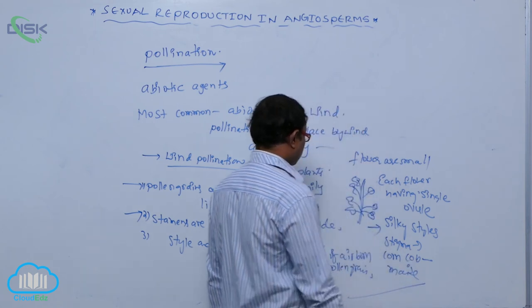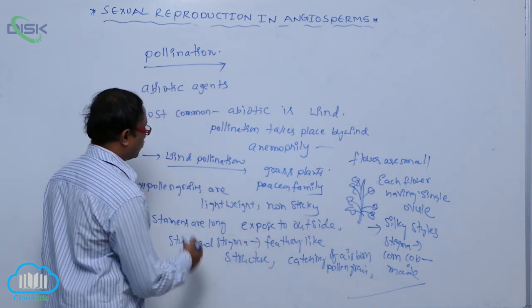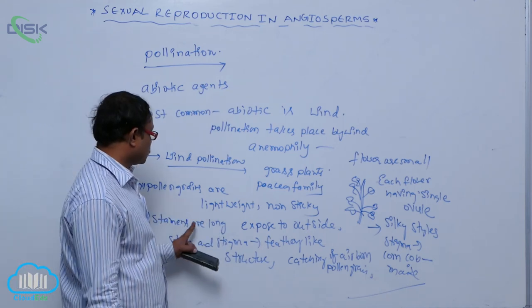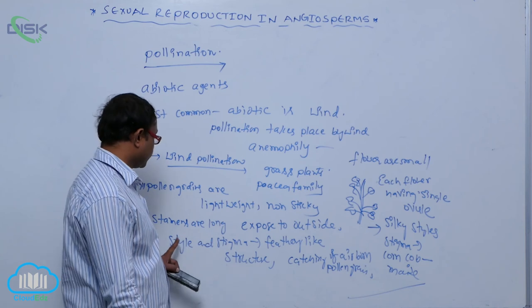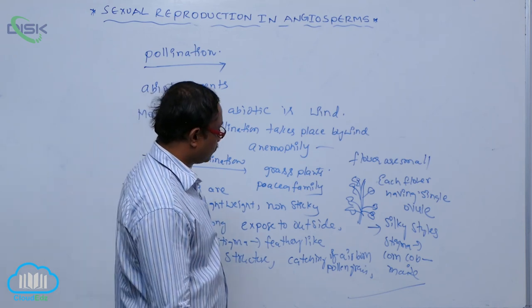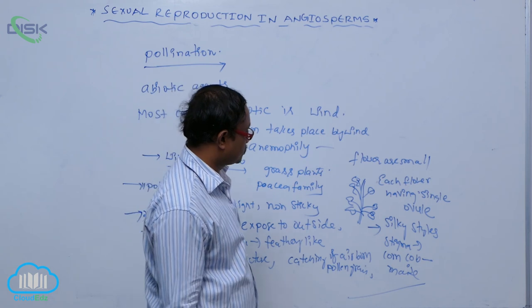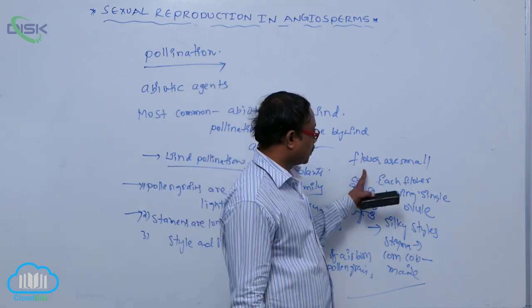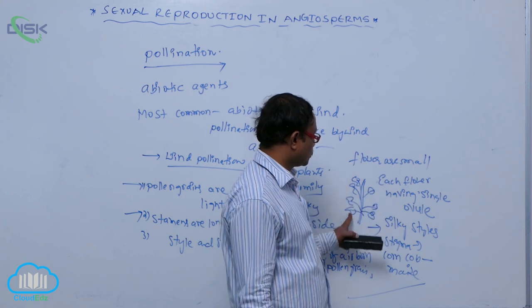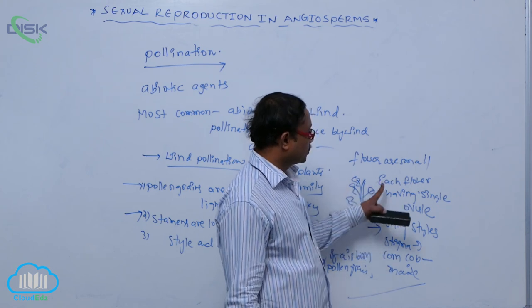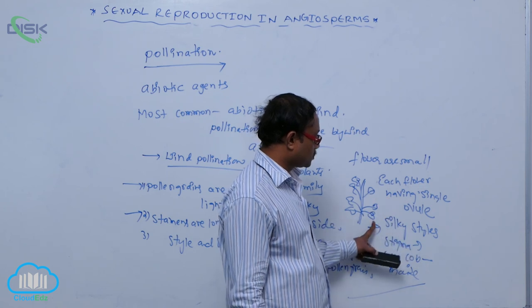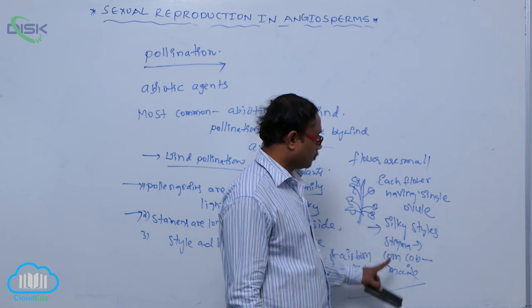These are the advantages of wind pollination: pollen grains are light weight and non-sticky; stamens are long and exposed to the outside; style and stigma are feather-like structures for catching pollen; flowers are small and form an inflorescence; each flower has a single ovule; and the stigma is silky, as seen in maize.